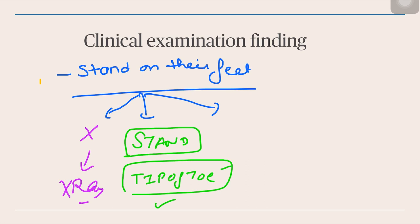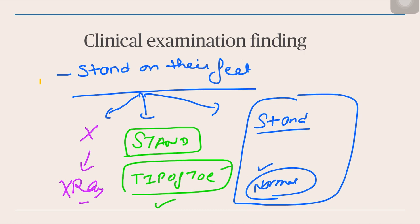The third scenario: there are patients who can stand on their feet, stand on the tip of their toes, and even do normal walking. Their complaint is pain in the midfoot when they start running. They say, 'I had a history of trauma and one week later, when I start running it hurts, but otherwise I am able to walk pain-free.' This could also be a sign of isolated Lisfranc ligament injury.